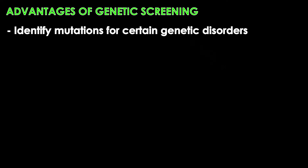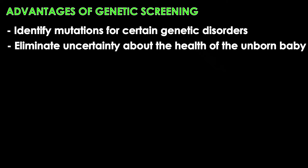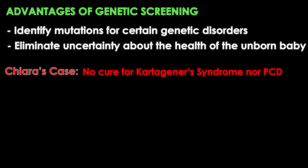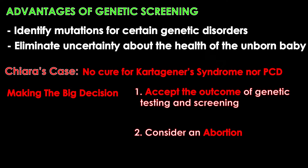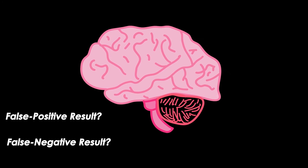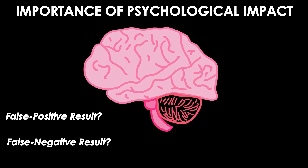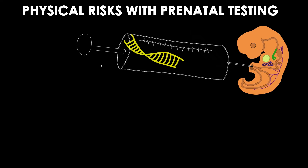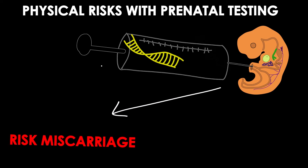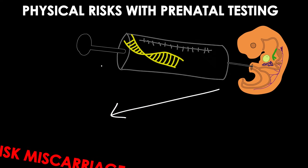These genetic tests may be beneficial to identify mutations for certain genetic disorders and will eliminate some uncertainty surrounding an unborn baby's health. In our case, there is no cure for Kartagener syndrome or PCD, and Chelsea's mother would only have the choice to accept the outcome of the test or to opt for abortion, which is not desirable. But what if there was a false positive or a false negative? The importance of the psychological impact of genetic testing cannot be underestimated. The only physical risks involved with genetic testing occur when DNA must be collected from a fetus through amniocentesis, which poses the risk of miscarriage.